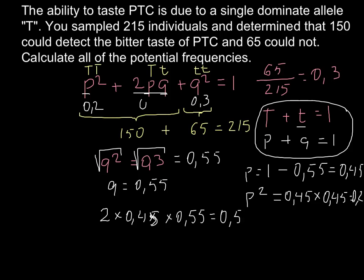And this is going to be frequency of the heterozygous people, who are heterozygous for this trait. So we have all frequencies for all the genotypes. And if we add them together, we are going to get 1. So all our answers are correct.